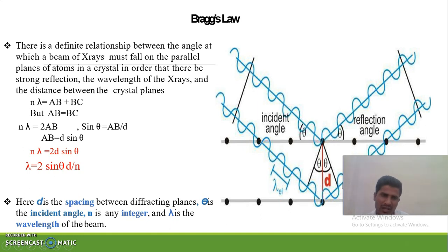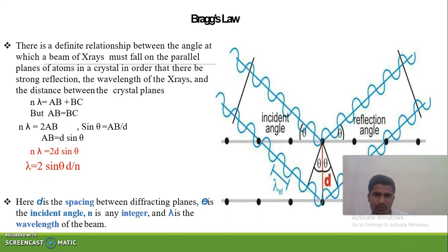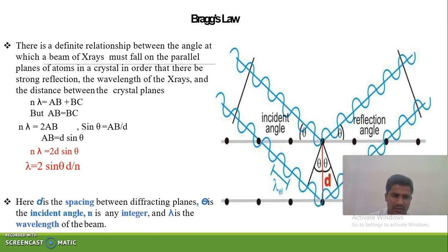The final Bragg equation is: n-lambda equals 2d sin-theta. Or in simple words, lambda equals 2d sin-theta divided by n, where d is the spacing between the two planes, theta is the incident angle, n is the integer, and lambda is the wavelength of the beam.